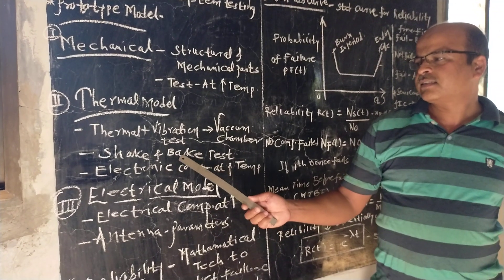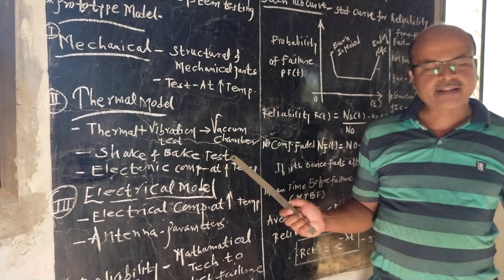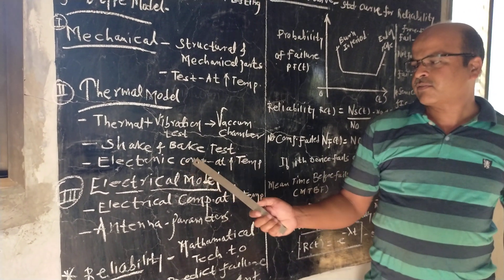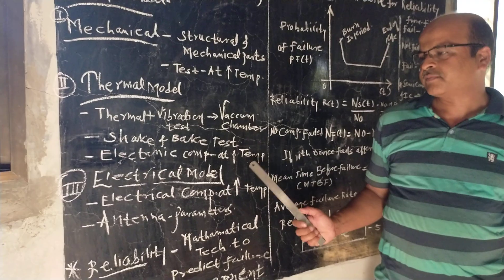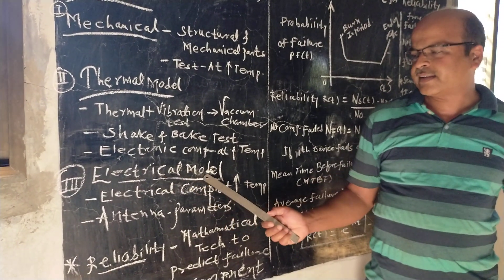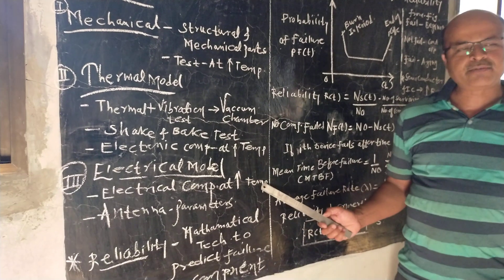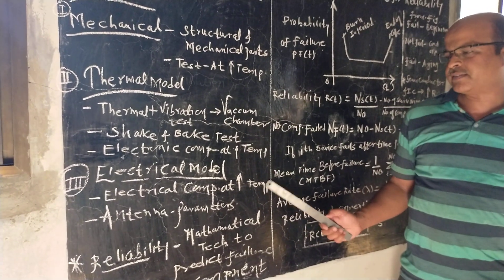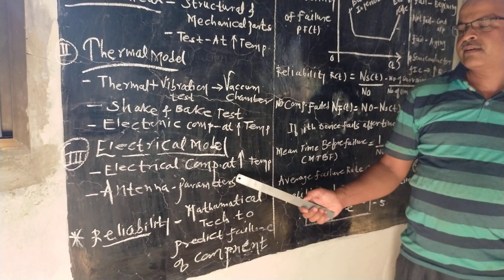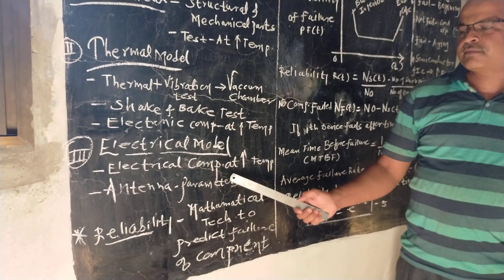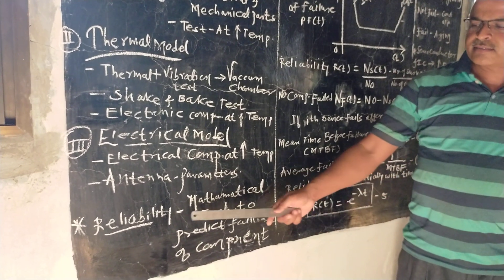The thermal model test is called the shake and bake test. Electronic components are also tested at high temperature. The third is the electrical model, in which electrical components are tested at very high temperature. Antenna parameters such as beam width, bandwidth, and gain are also tested.